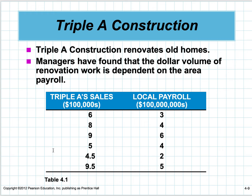Here's this company, Triple A Construction. They renovate old homes, and managers have found that the dollar volume of renovation is dependent on the area payroll—if the area payroll goes higher, their sales go higher. They measure the local payroll in millions of dollars and their sales in hundreds of thousands of dollars.